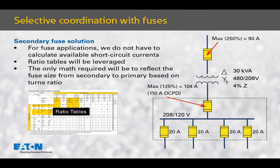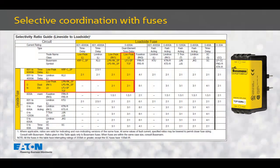The only tricky math we're going to have to use is to reflect the secondary branch fuse amp rating to the primary via the turns ratio. I am going to make the call of using the TCF fuse in this application because it has the full range of ampacity, up to 100 amps, that is needed. The TCF is a great solution providing the time delays we need for inrush currents and current limitation for reduced incident energy values.